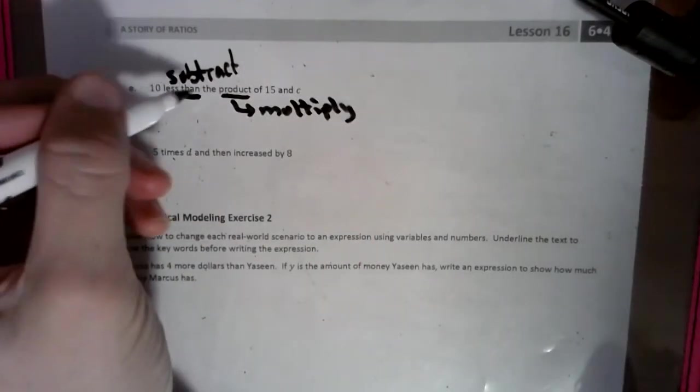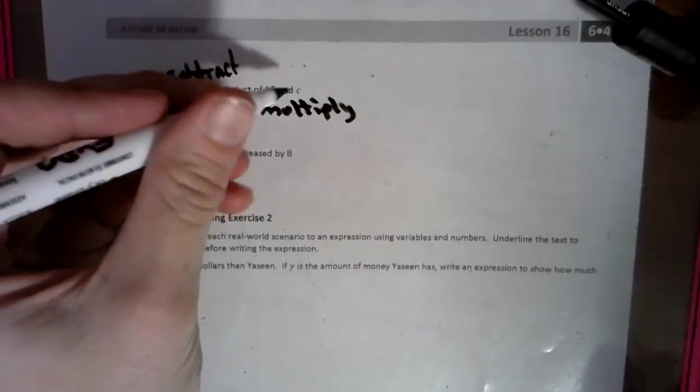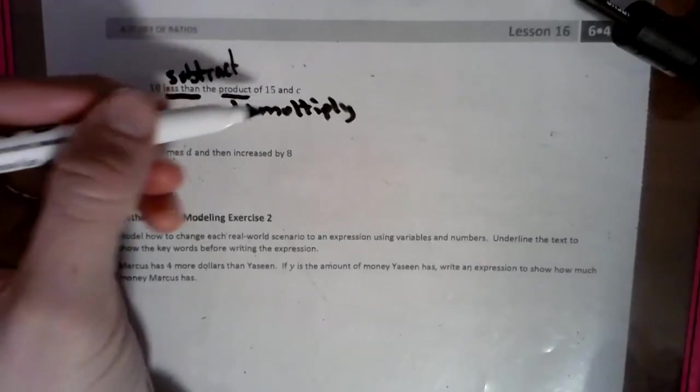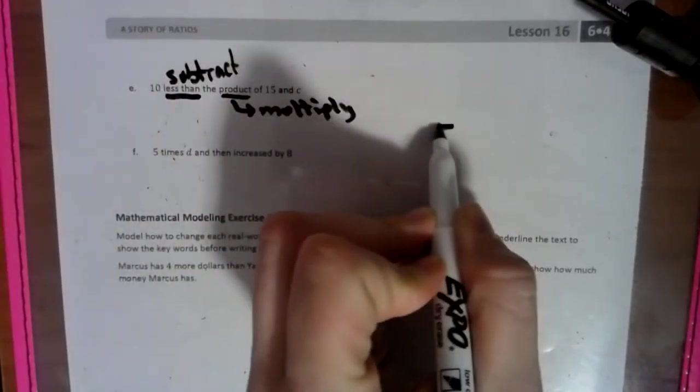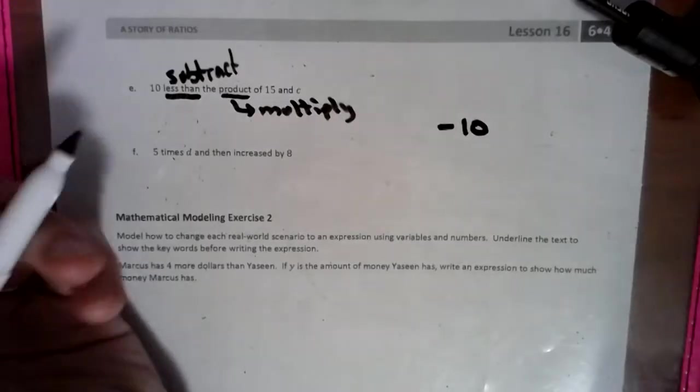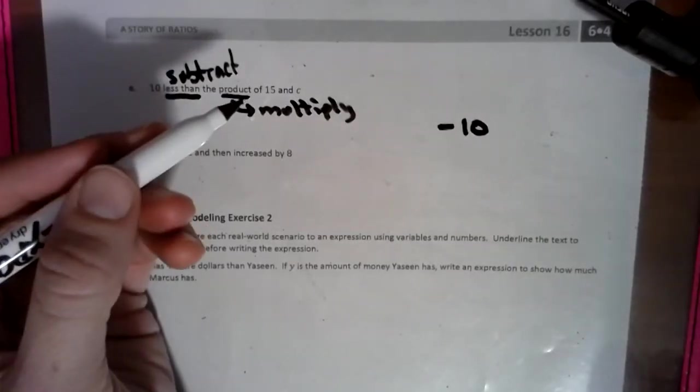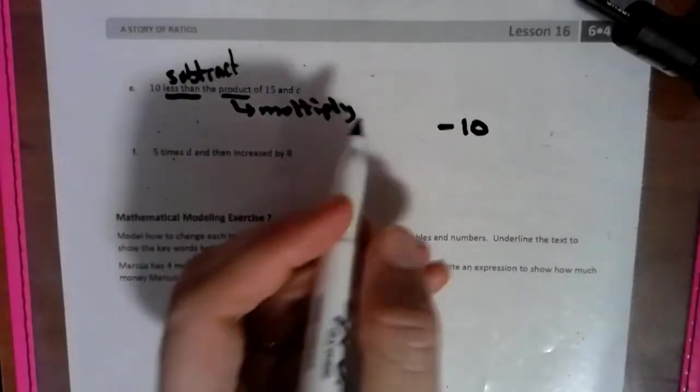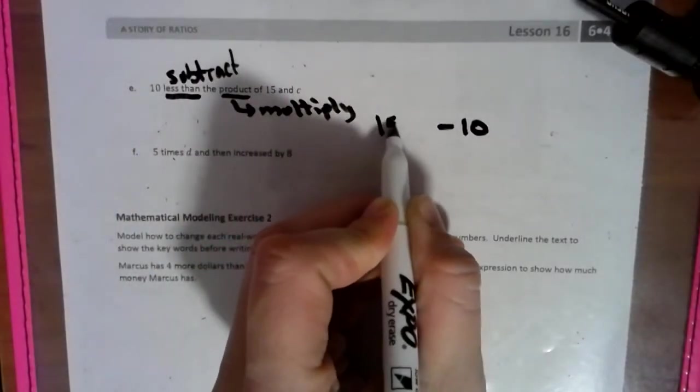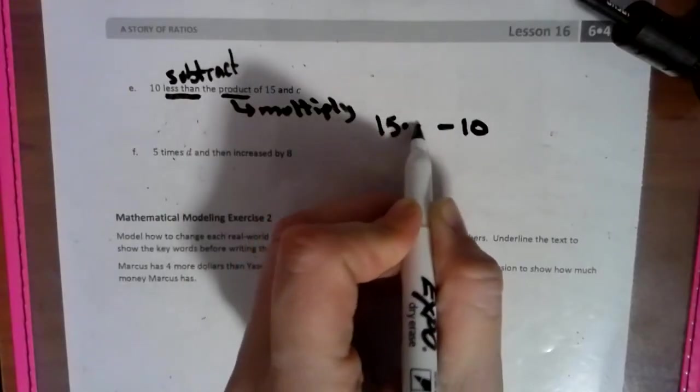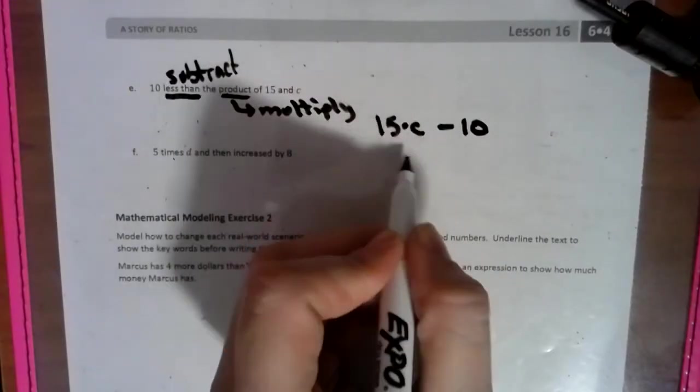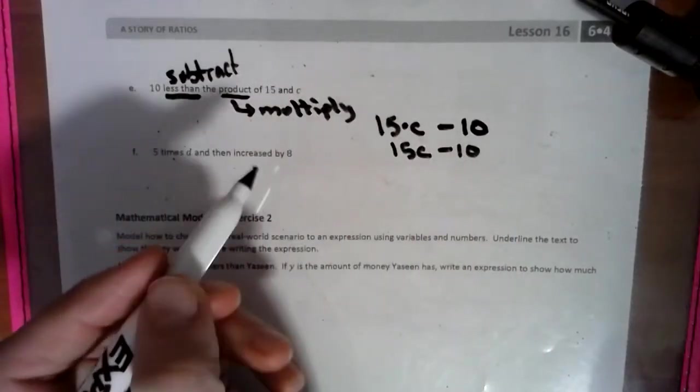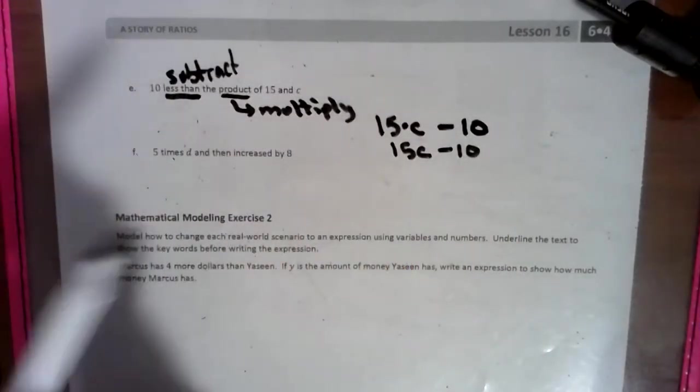All right. So we have 10 less than the product of 15 and C. Whatever we have here, we have to take 10 less than this, so I'm going to put minus 10 at the end. And the product of 15 and C means we have to multiply 15 and C. As we know, we don't want to use that X anymore, so we can either use the dot or we can do 15C minus 10.